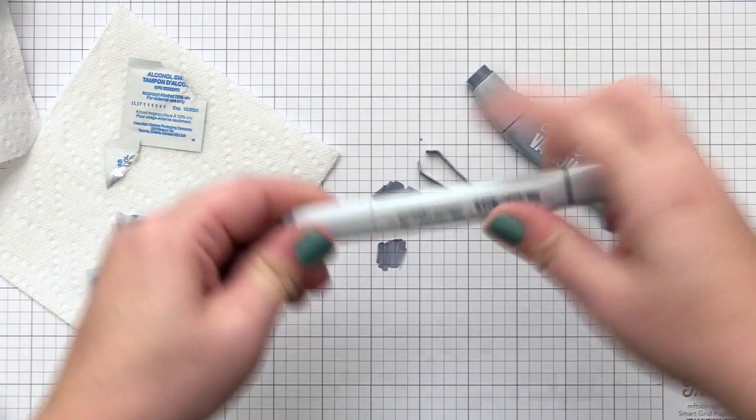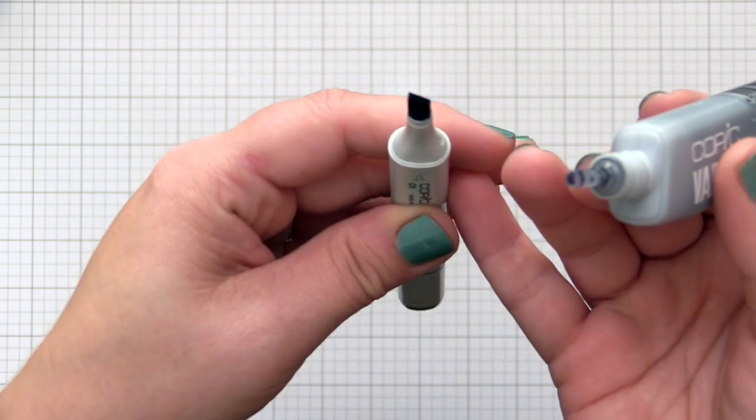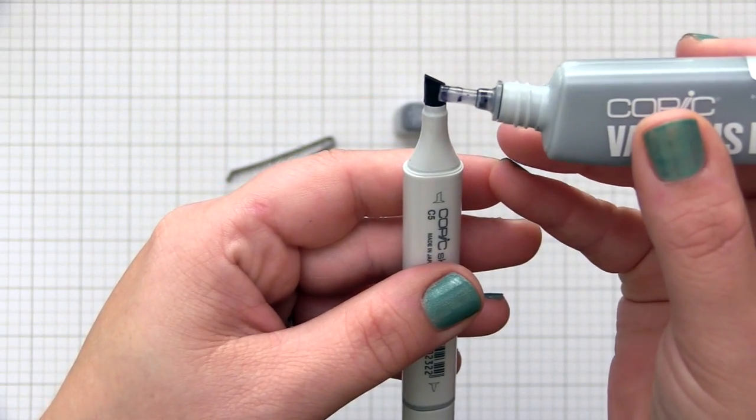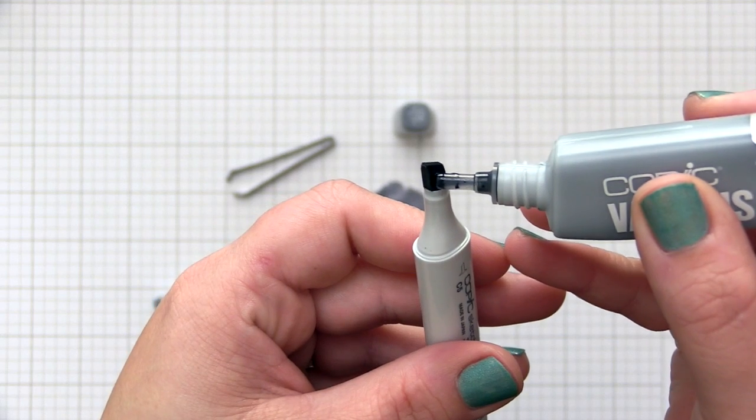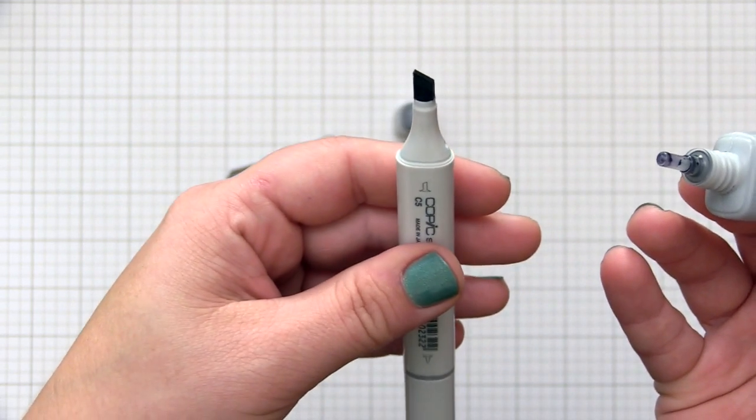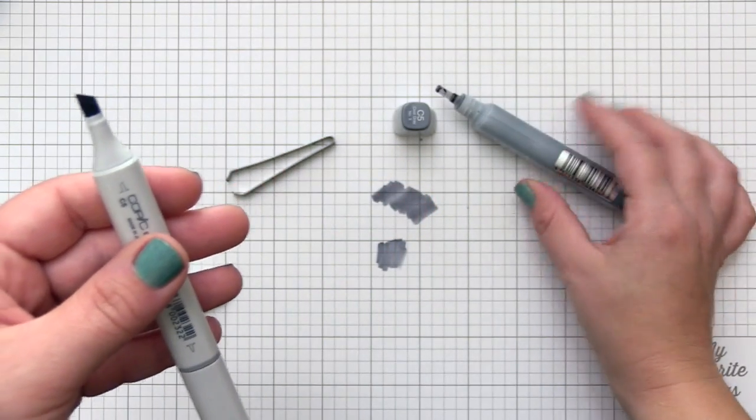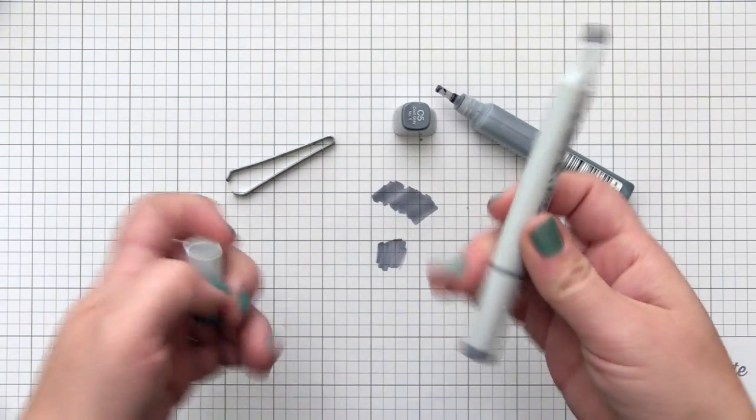I also wanted to quickly share my lazy way of refilling markers. This is another way to add ink to a marker, but it definitely takes a long time. Instead of completely removing the nib, you can put the refill against the nib, go very slowly, and do a couple drops at a time. It will refill that way too.